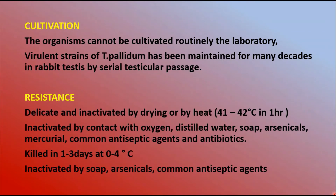Regarding cultivation: Treponema pallidum and other pathogenic treponemas cannot be cultivated in the artificial culture media used routinely in the laboratory. However, certain treponemas are able to grow in co-cultivation with tissue culture cells, and this growth can be maintained in motile and virulent form for about two weeks in complex media under anaerobic conditions. The virulent strains of Treponema pallidum have been maintained for many decades in rabbit tissues by serial testicular passages.